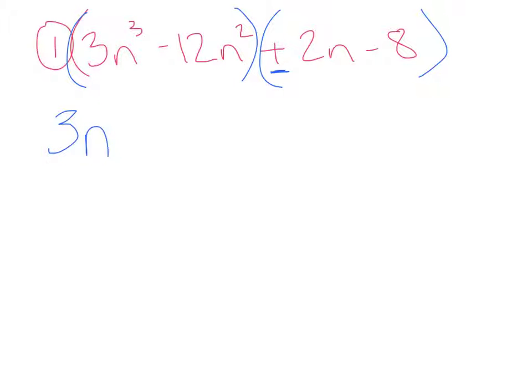n can go in there, but if you look, you have an n³ and an n², so you can take out an n² because they both have at least that. So we're going to divide everything by 3n². When we do that, you get n - 4. The n² cancel.